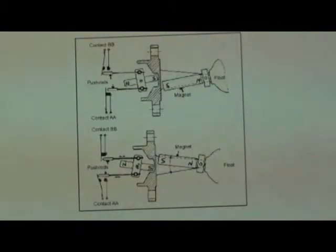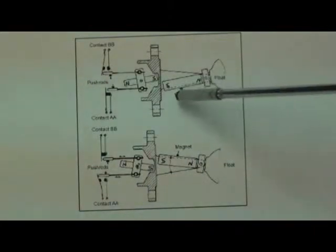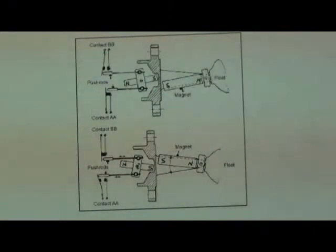The principle of operation is magnetic repulsion. One permanent magnet forms part of the float assembly. Here's the float, here's the permanent magnet. In this case south pole, north pole.